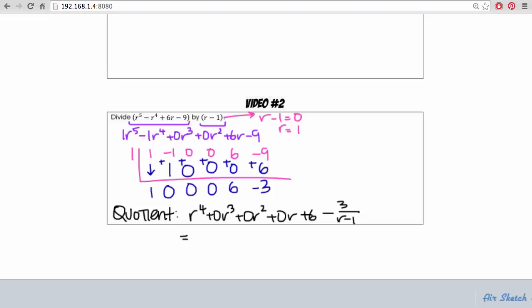You could also rewrite it as r to the 4th plus 6 minus 3 over r minus 1. And the reason why is because we have all of these terms that are just 0 r's or 0 r to the powers and we know that 0 times anything is just 0. And that's it.